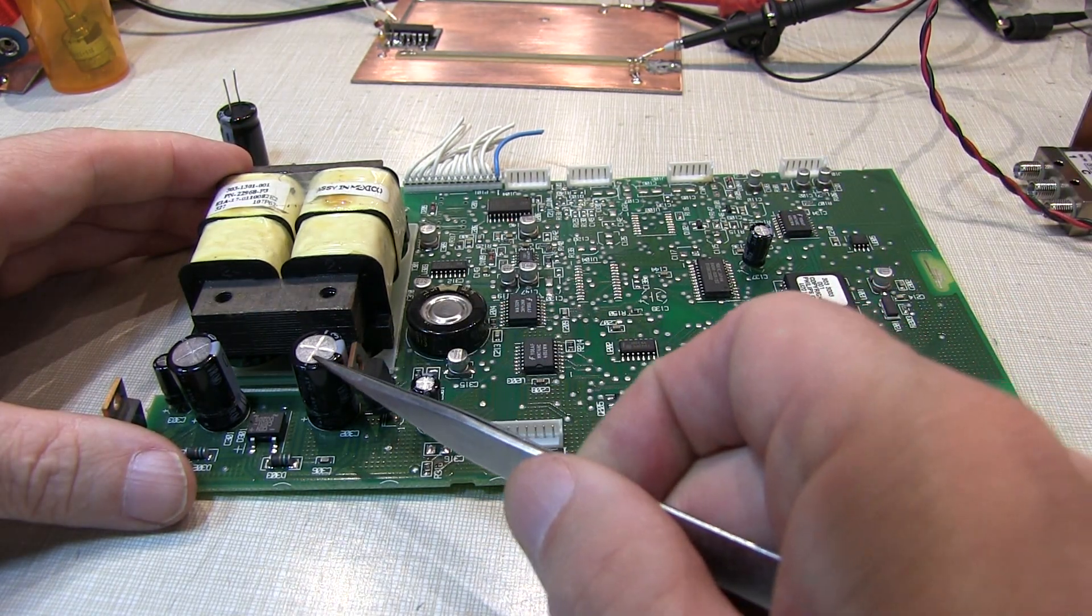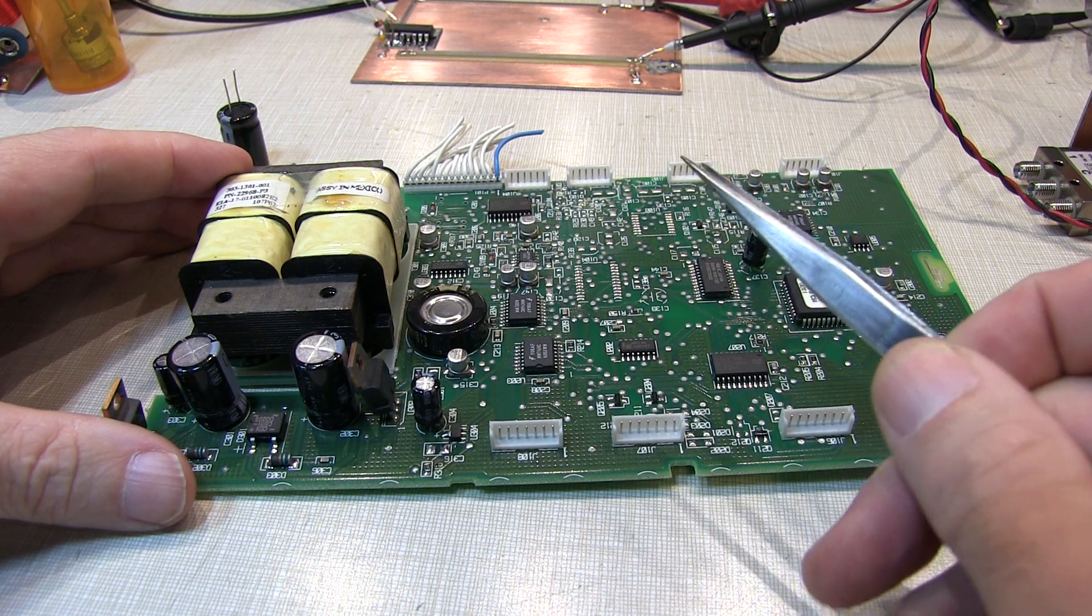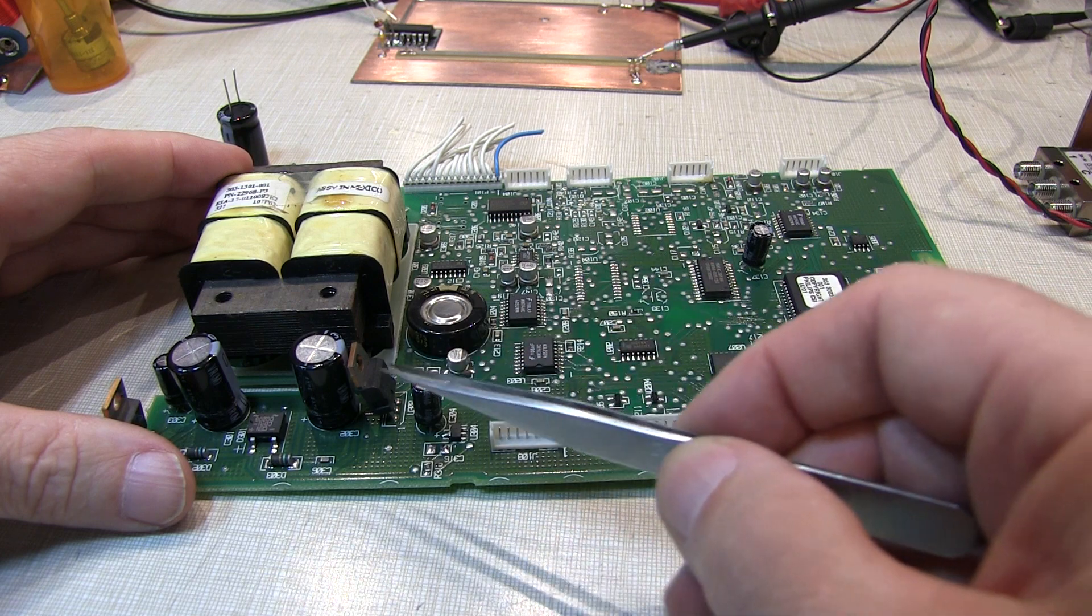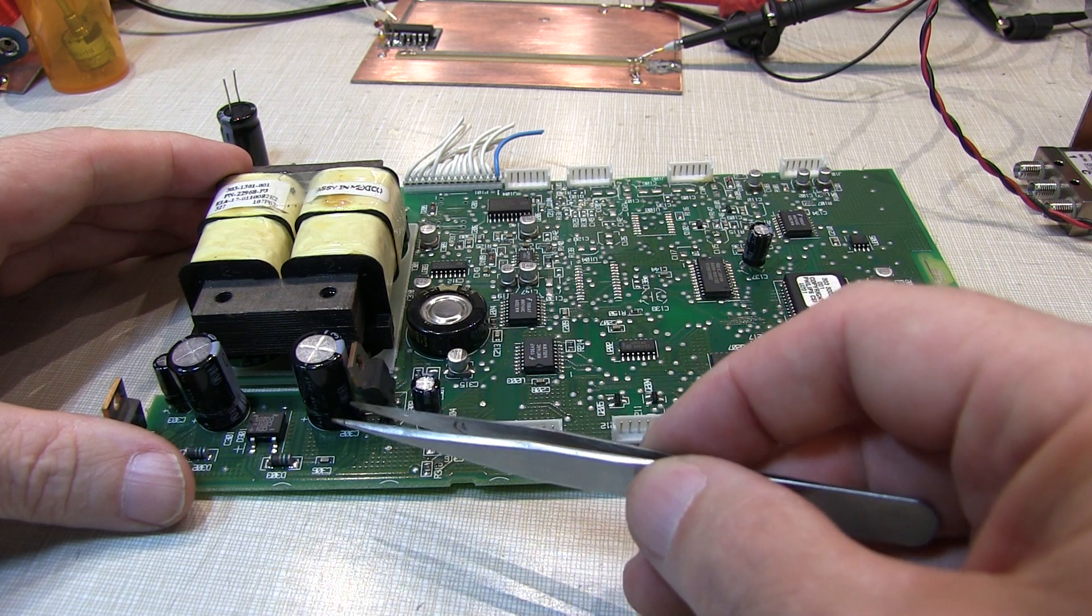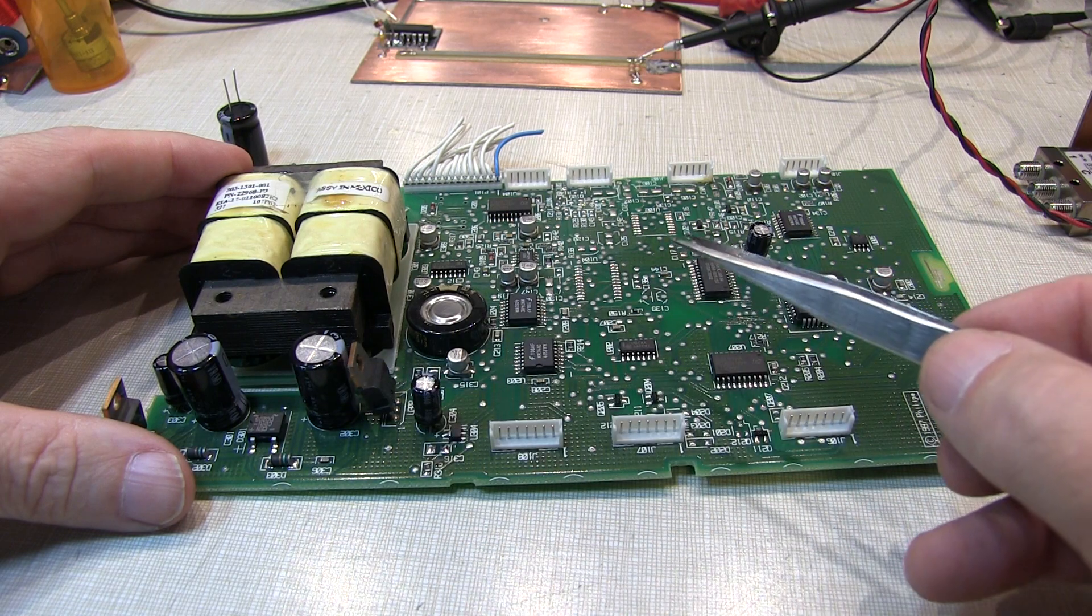Large value capacitors, like these big electrolytic capacitors, essentially form kind of charge storage reservoirs and do the bulk of the filtering for large, relatively low frequency current demands of the rest of the board.